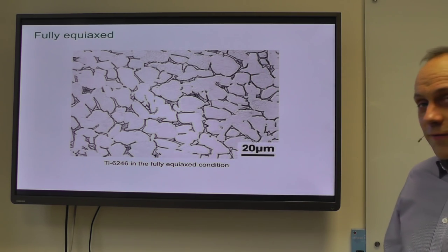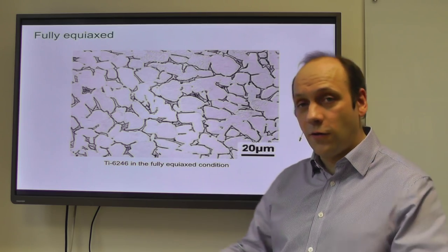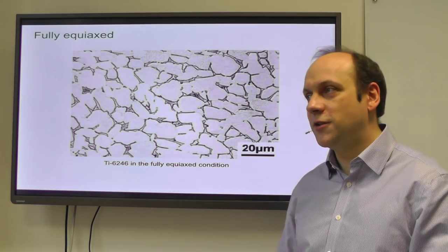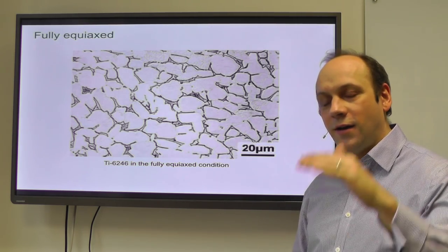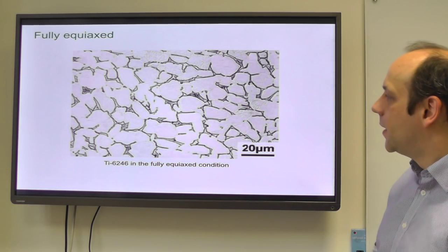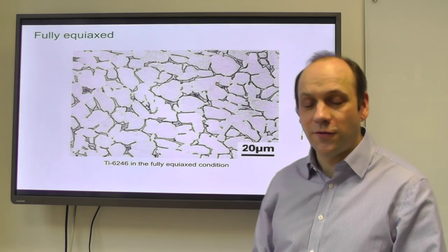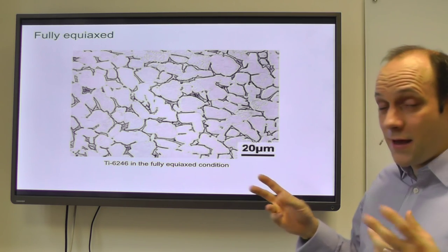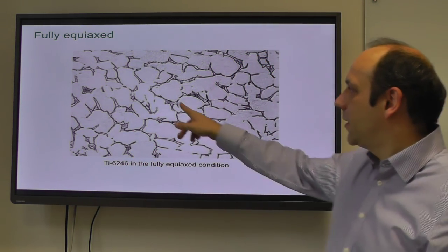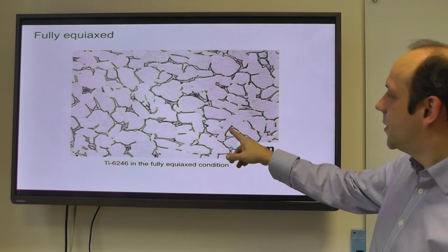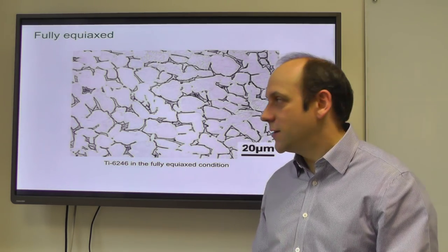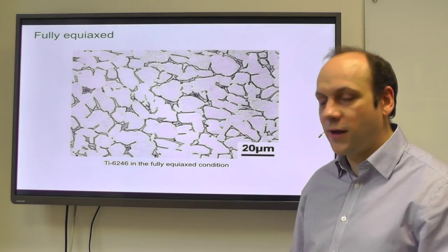The third microstructure type is fully equiaxed alpha, where the primary alpha constitutes all the alpha with no secondary alpha. This is achieved by recrystallizing after alpha-beta deformation fairly low in the alpha-beta phase field - at a temperature low enough that all the alpha was already present. That's a fully equiaxed condition for Ti-6246. Equiaxed is defined as a microstructure where the primary alpha grains touch each other with only isolated pockets of beta left in between, typically sub-micron in size while primary alpha grains are around 20 microns.